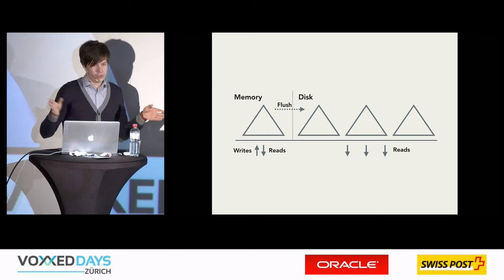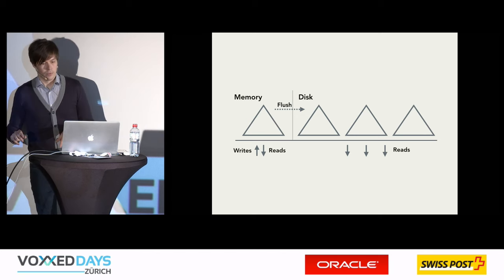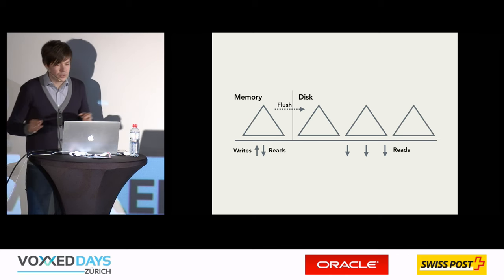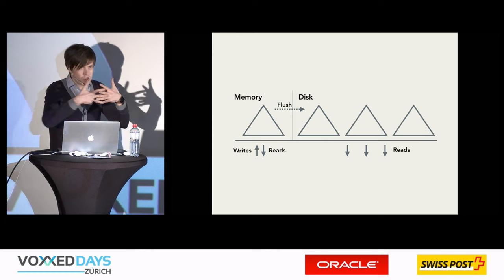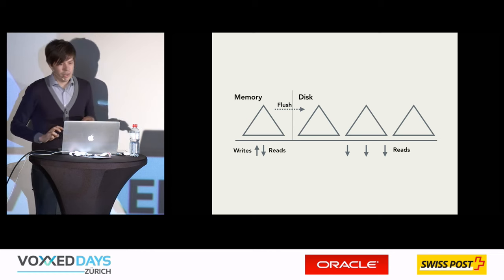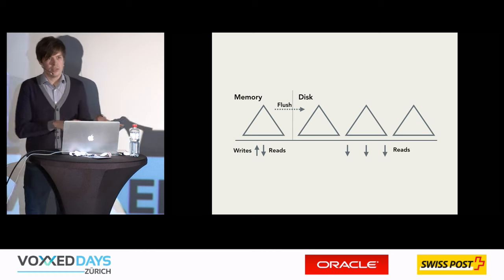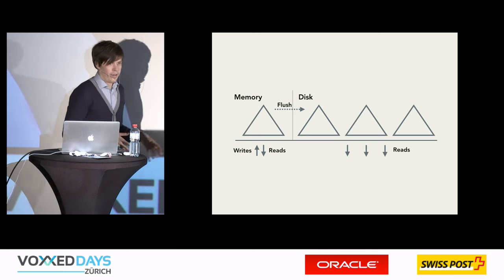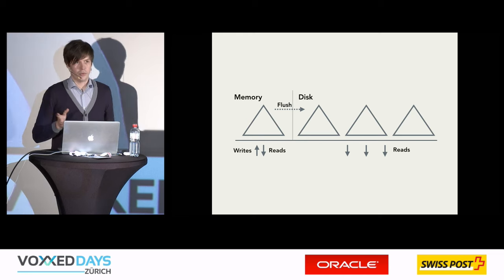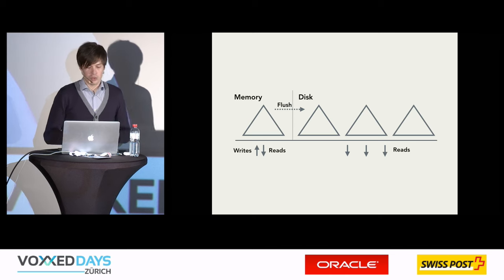Whenever the in-memory table's size reaches a certain threshold, it is written to disk in a process called flush. Retrieving data requires searching all disk-resident parts of the tree, checking the in-memory table, and merging their contents together before returning the result. The disk-resident tables and their files are immutable — once written to disk, they are never modified. They can only be read from or deleted, but not modified at all.